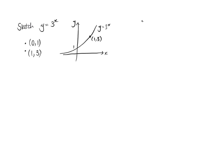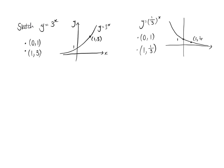One where it gets a little more difficult is y equals one-third to the x. You still have your (0, 1), but instead of (1, 3), you've got (1, one-third). So this is an exponential decay. You draw the shape — that's 1 on the y-axis — and somewhere here you've got (1, one-third). Not overly more complicated, just a little.